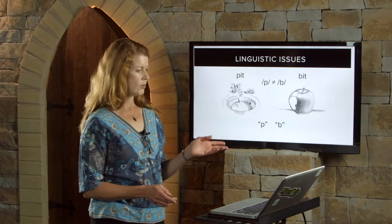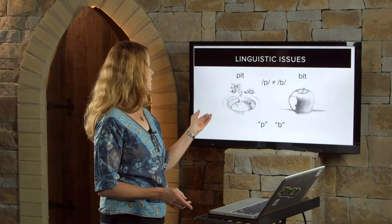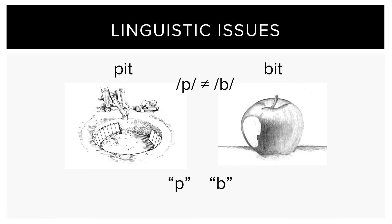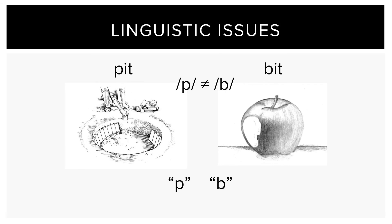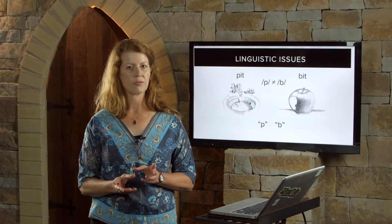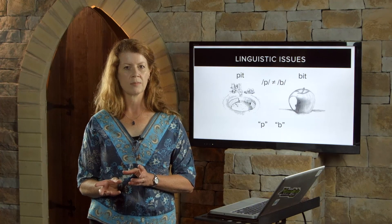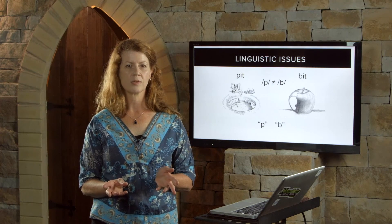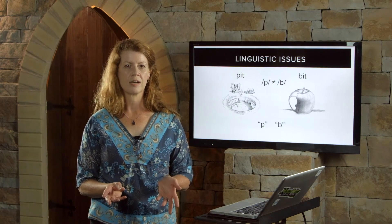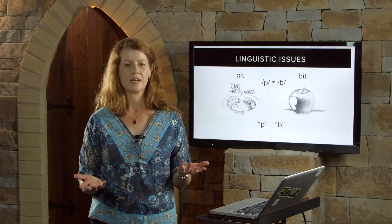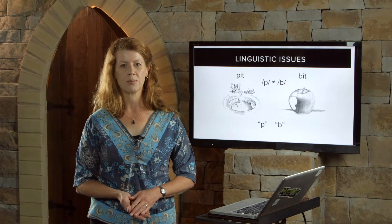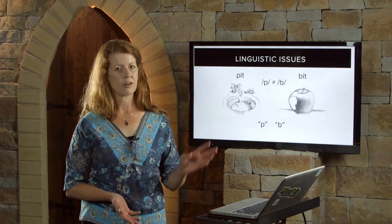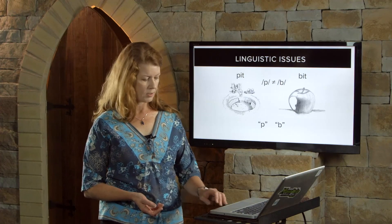For example, as you can see on this slide, in English 'pit' and 'bit' mean different things. So it follows that P and B are different phonemes and they have to be represented by different letters in the written language, otherwise meaning couldn't be communicated. There are a lot of other examples like that in English.